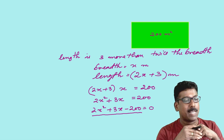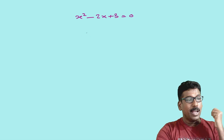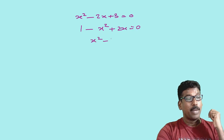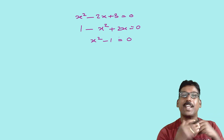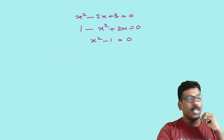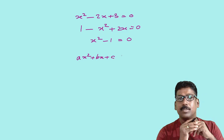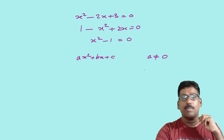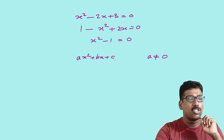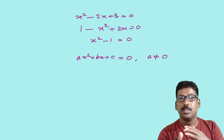Now let me take some examples of quadratic equations. x squared minus 2x plus 3 equals 0 is a quadratic equation. And 1 minus x squared minus 2x is a quadratic equation. x squared minus 1 is a quadratic equation. In this way you can write many examples. Now, what is the standard form of a quadratic polynomial? The standard form is ax squared plus bx plus c, where a is not equal to 0. Then can you say what is the standard form of a quadratic equation? Yes, it is ax squared plus bx plus c is equal to 0. That means, a quadratic polynomial equal to 0 gives you a quadratic equation.